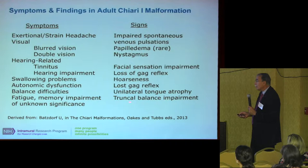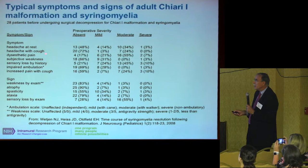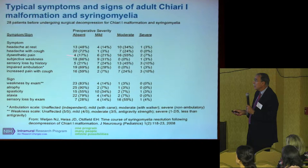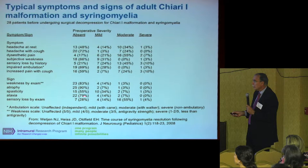Looking at 28 patients in our clinic with Chiari, about half don't have severe headache at rest, but most have headache with cough. Some have dysesthetic pain related to syringomyelia. Ataxia — unsteadiness — is generally a cerebellar symptom; about four out of five people don't have it. Most syrinx patients have sensory loss.